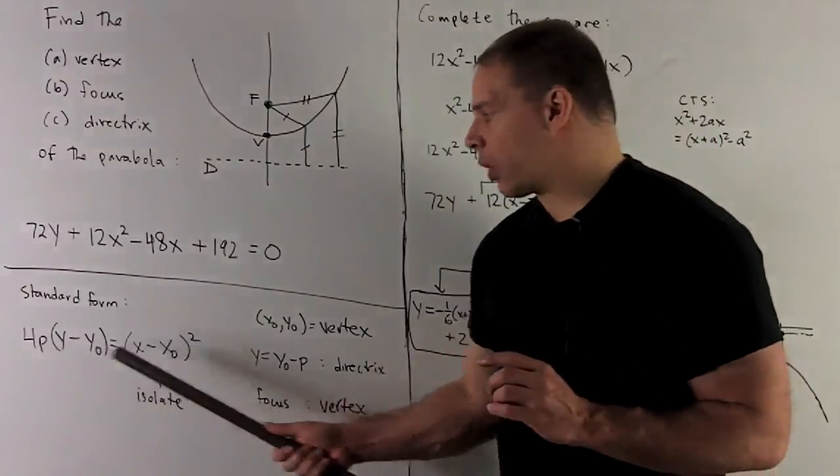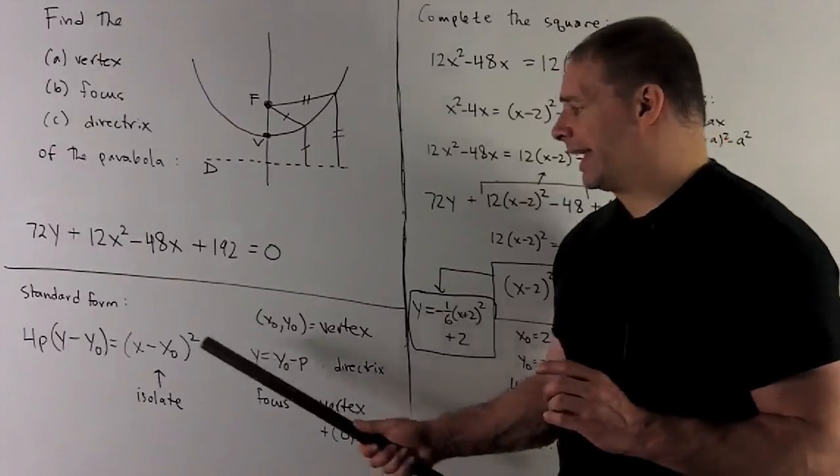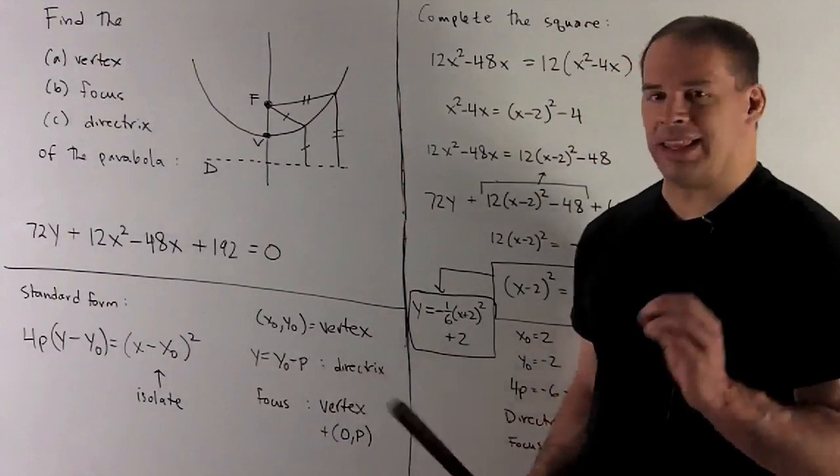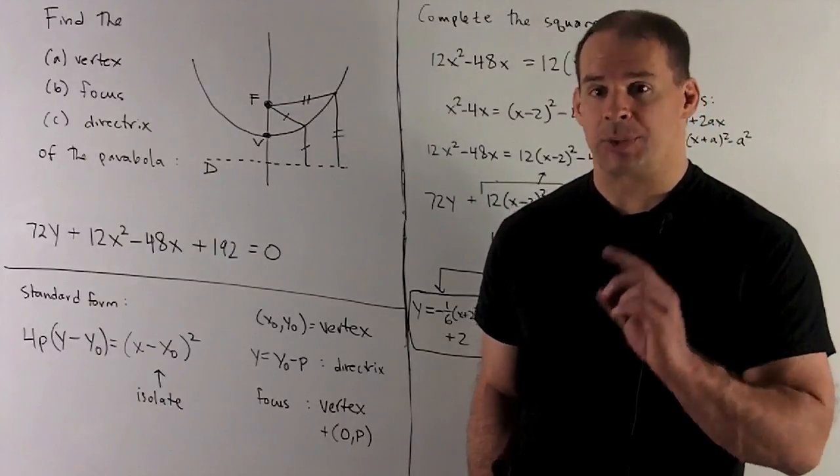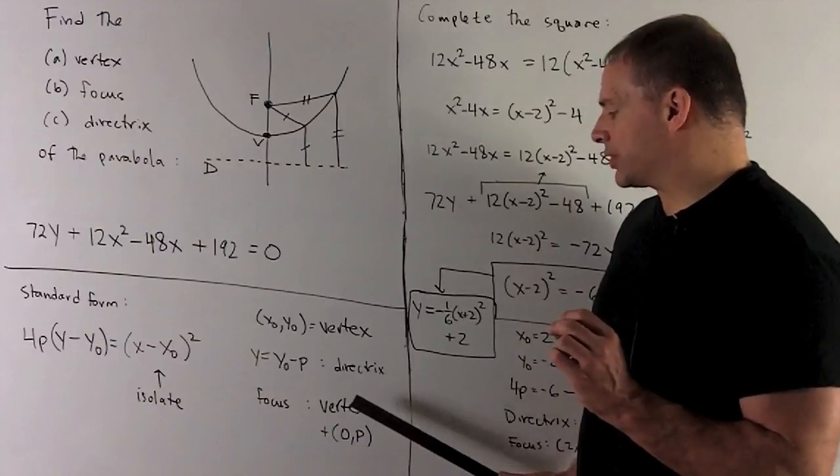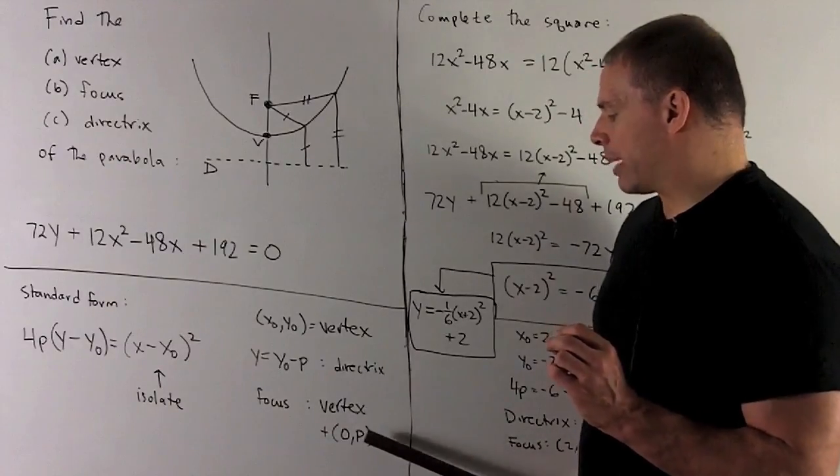When I'm in this form, vertex is just going to be (X₀, Y₀). Our directrix is just going to be the line Y = Y₀ - P. And then, our focus, that's just going to be the vertex plus the point (0, P).